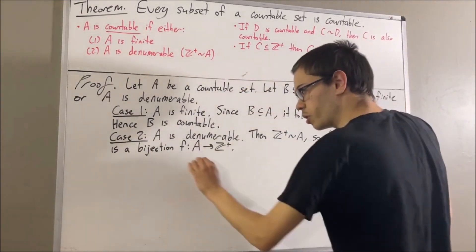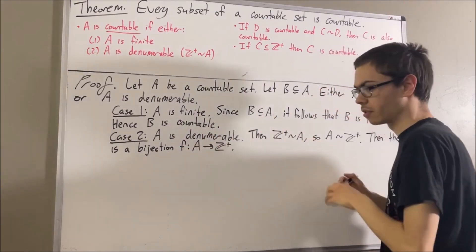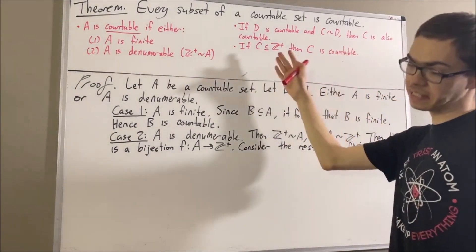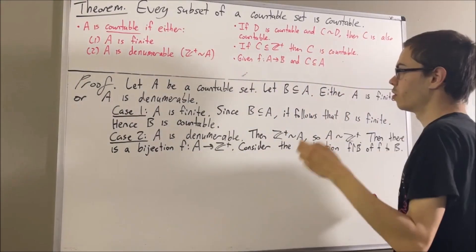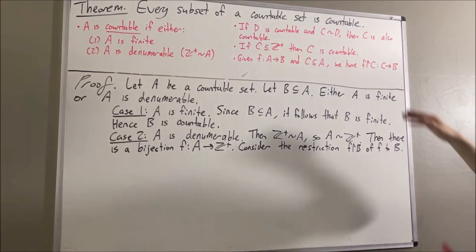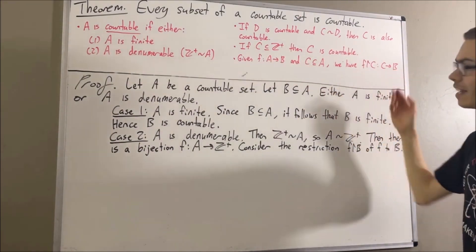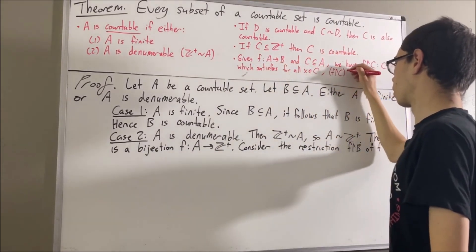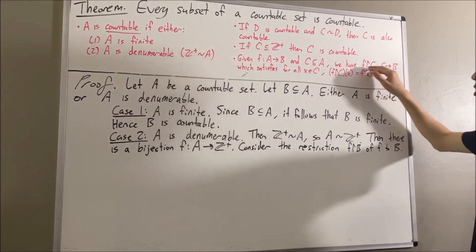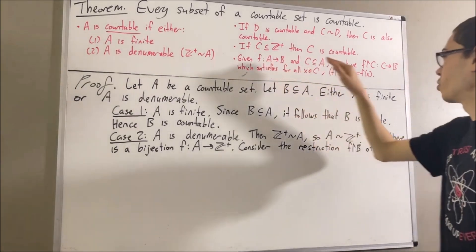What we're going to do is restrict the domain of F to B — this is what we call the restriction of F to B. To review: if we have a function F from A to B and C is a subset of A, then the restriction of F to C is a function from C to B, where for every element x in C, the restriction of F to C evaluated at x equals F(x). F and its restriction do essentially the same thing; the only difference is that the restriction has a smaller domain. It turns out that if F is injective, then the restriction of F to C is also injective.